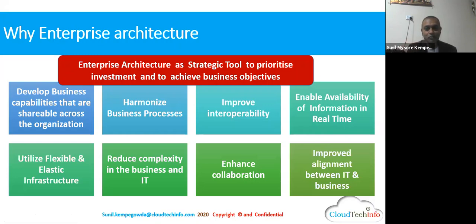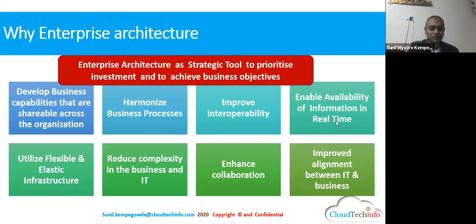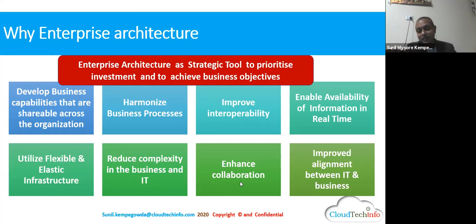Only if you have a centralized record can you make accurate decisions. Enabling availability of information in real time is the most important thing. SAP is spending a lot of money on the health industry. One of SAP's CIOs in the U.S. had an accident and lost his eye because his record was not available in actual time. Afterwards he initiated the health vertical in SAP. Flexible infrastructure is available — make use of it. Because systems are built for vertical scaling, when you go to cloud, make use of the flexibility. Complexity must be reduced — make monolithic systems micro. Enhance collaboration, and EA brings in alignment.